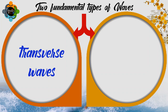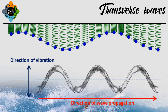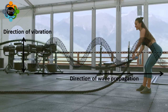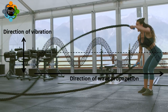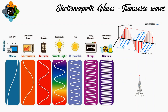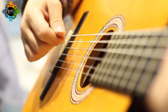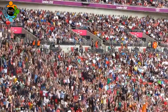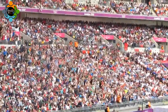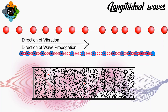Now let's talk about two fundamental types of waves: transverse waves and longitudinal waves. Transverse waves oscillate perpendicular to the direction of their propagation. Examples include waves generated by shaking ropes, electromagnetic waves such as radio waves, microwaves, and ultraviolet light, vibration of a guitar string, and Mexican waves in a sports stadium.